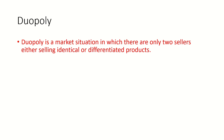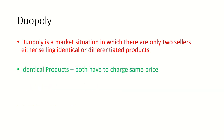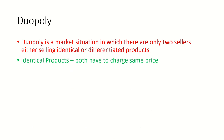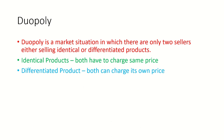Duo means two and poly means sellers. It is a market situation where there are only two sellers, and they may sell identical products or differentiated products. If they are selling identical products, both have to charge the same price. If they are selling differentiated products, both can charge their own price. A real example of duopoly is Coca-Cola and Pepsi.